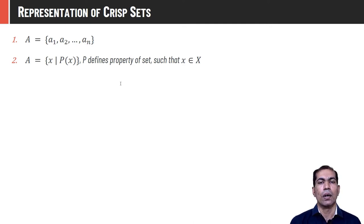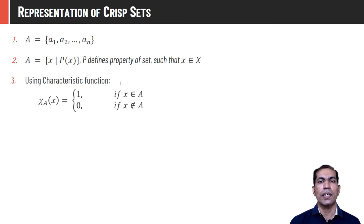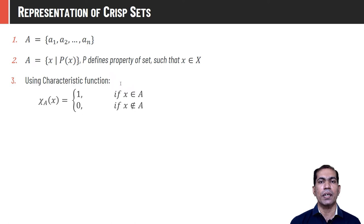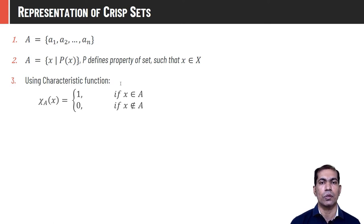For example, A could be the set of all elements whose value is less than 10, or the set of all perfect squares less than 10. A third way is to assign membership values using the characteristic function — if the property is true, assign membership value 1; if not satisfied, assign membership value 0.